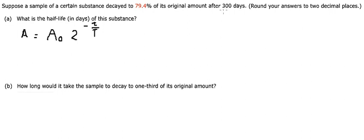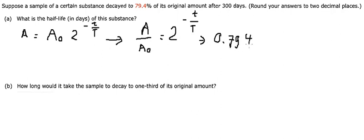They want to find what is the half-life in days, that's capital T. We also know that after 300 days, that's the small t, we have 79.4 percent. That means we have A over A₀ equal to 2 to the power of negative small t over capital T.